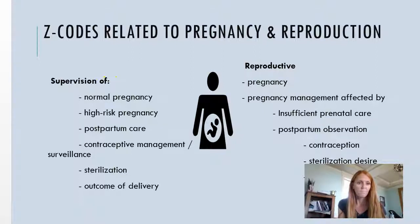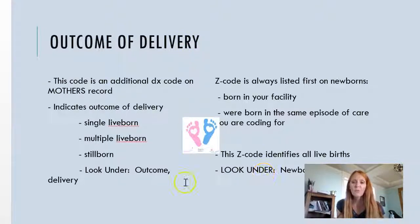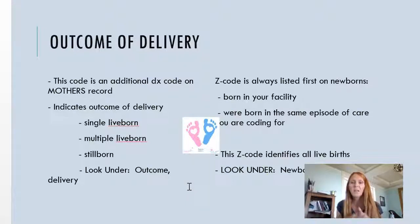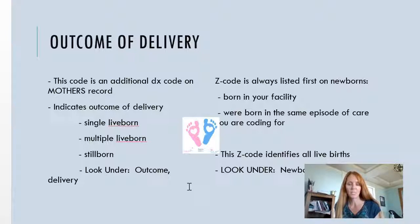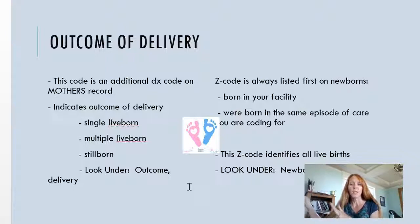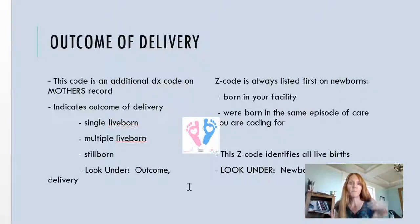Outcome of delivery: I want to clarify that there's an outcome of delivery code that goes on mom's chart. Mom and baby are each coded separately — you never put a newborn code on mom's chart, and you never put outcome of delivery on the baby's chart. They're each their own person once the baby is born. For mom, you have to say what came out of her delivery process — was it a single live born, multiple stillborn, et cetera. For the baby, you go to newborn, outcome of delivery.